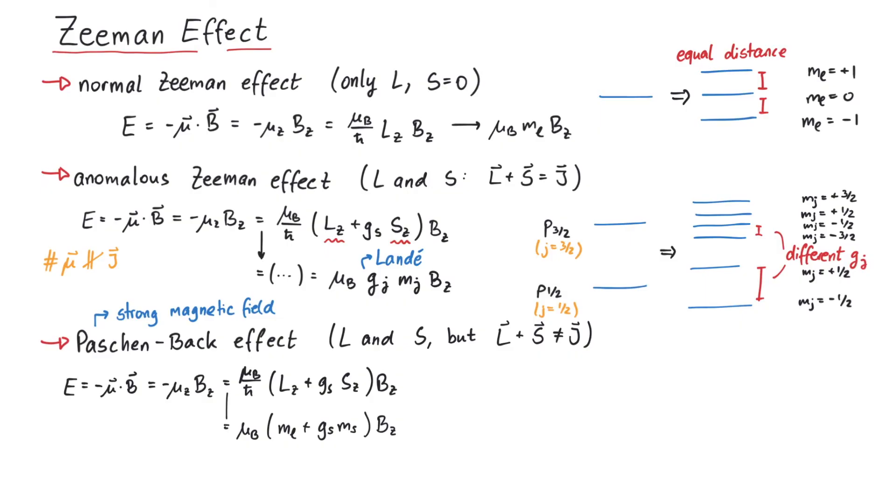Note here that since gs is approximately 2, even though spin takes on half integer values, it looks like an integer contribution.